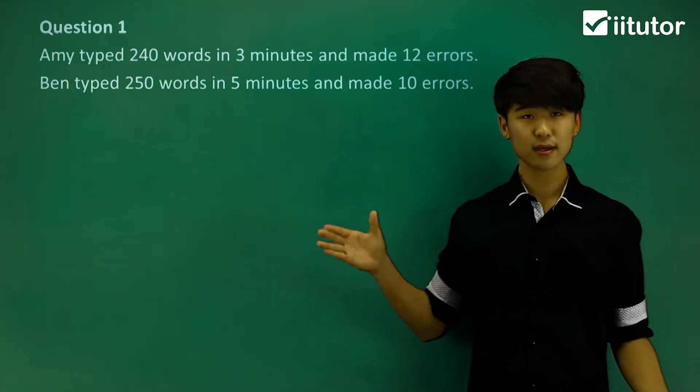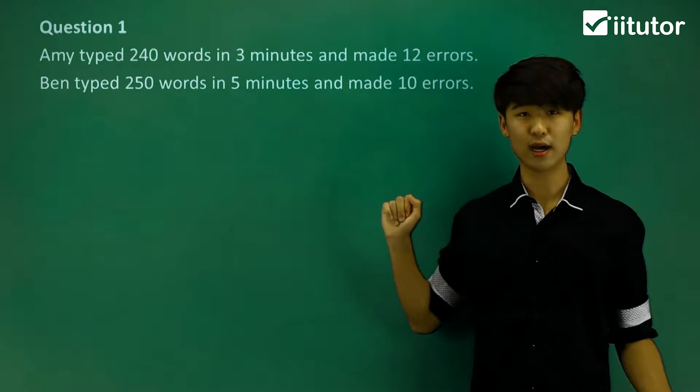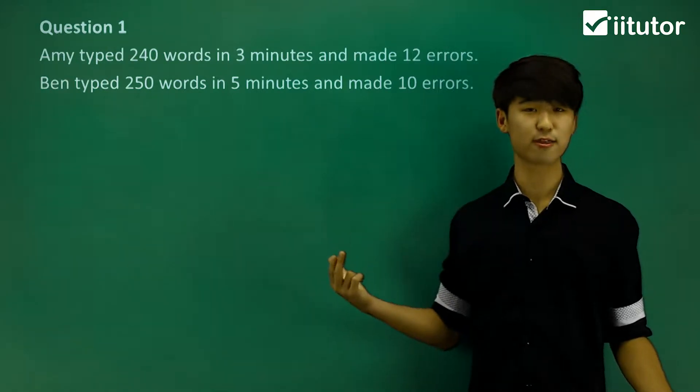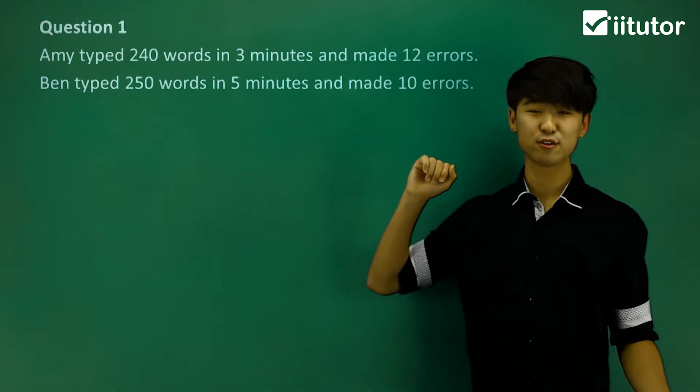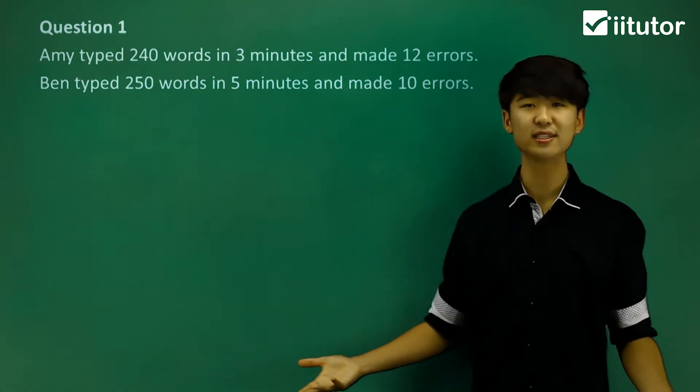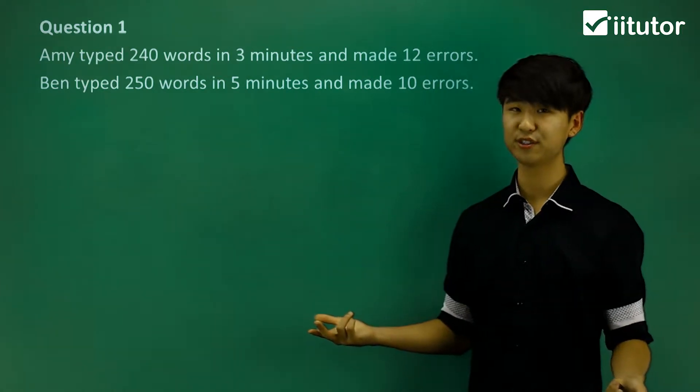Now we have Amy and Ben. Amy typed 240 words in three minutes and made 12 errors. Ben typed 250 words in five minutes and made 10 errors.